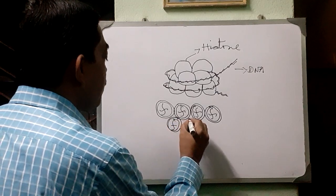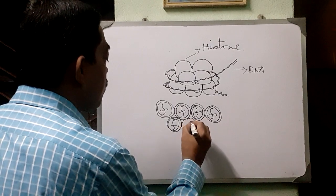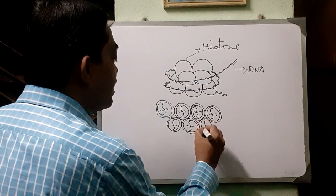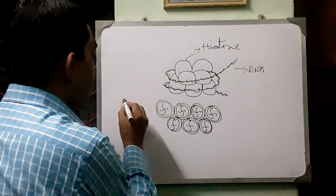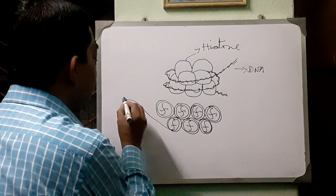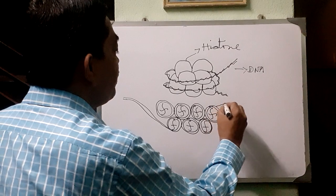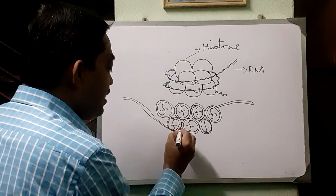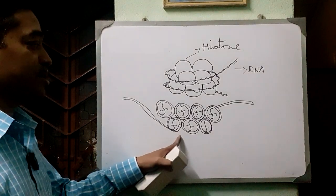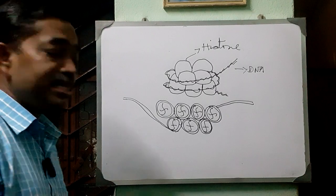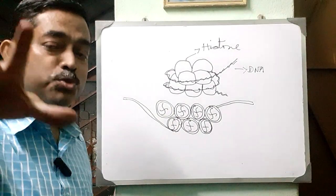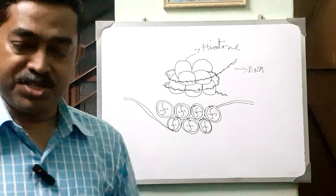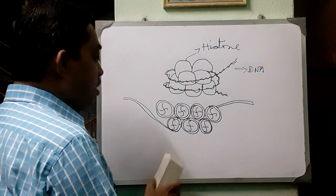When the gene will not be expressed, the DNA will be tightly bound. The gene present in the DNA will not be exposed to RNA polymerase and transcription factors for transcription. So gene expression will be suppressed and gene expression will not be done.